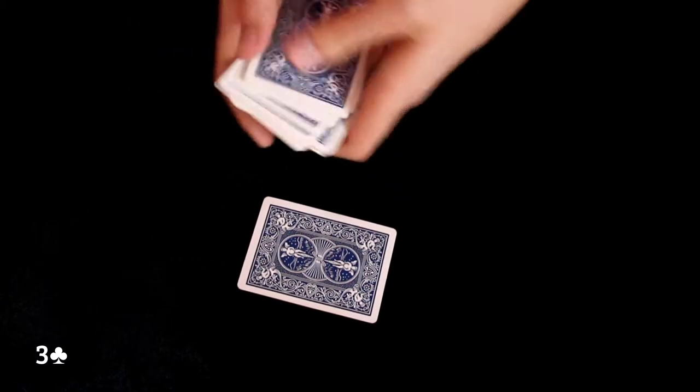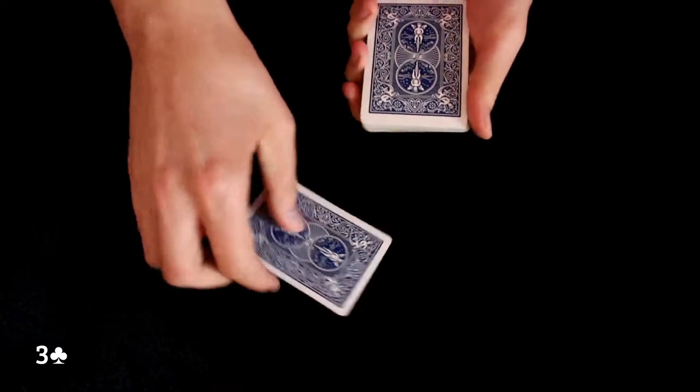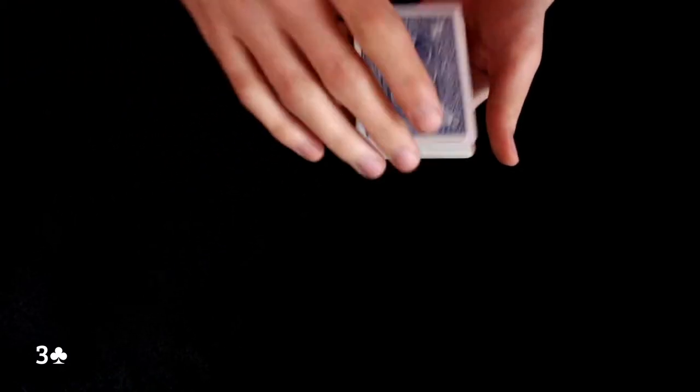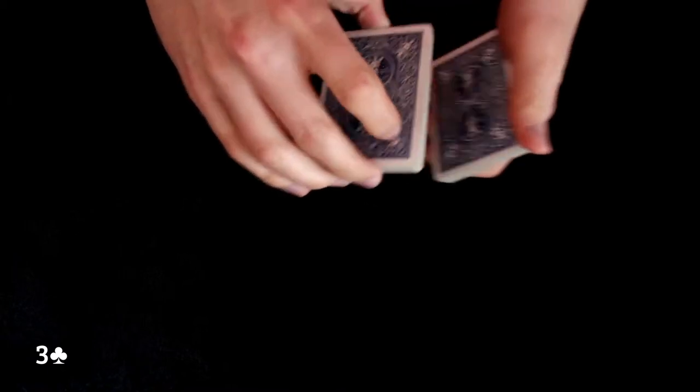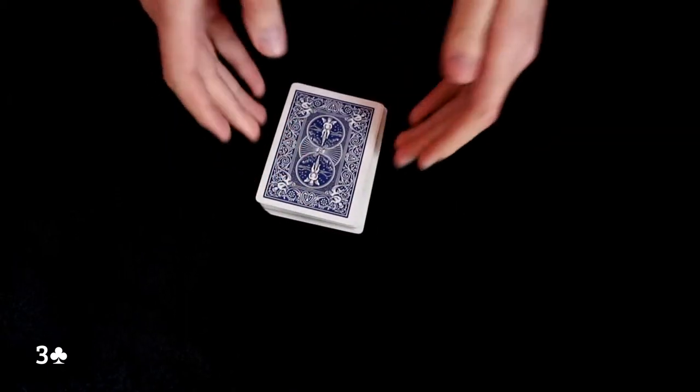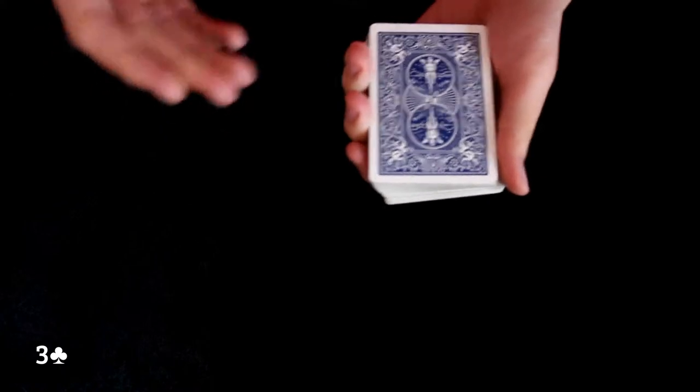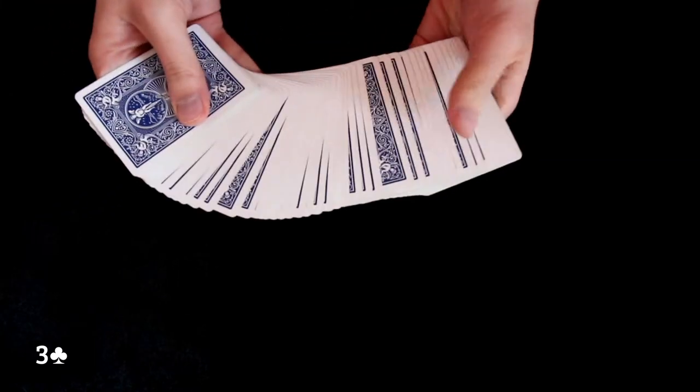Now I will square the deck and I will take the selected card and place it on top and I will let the spectator to cut the card so the selection is lost somewhere in the deck.